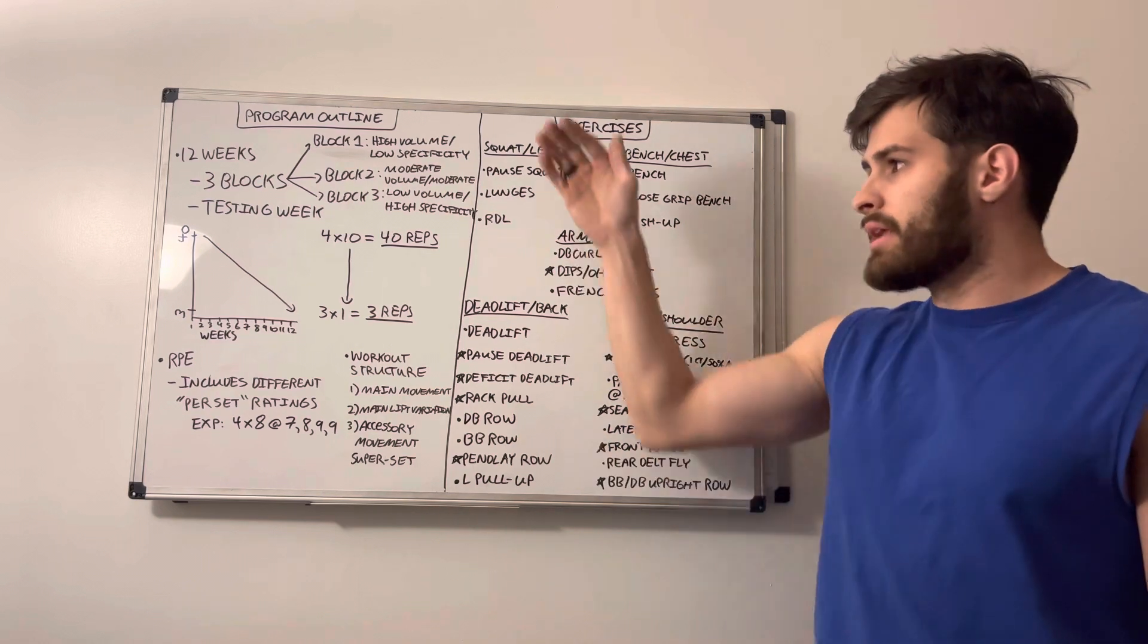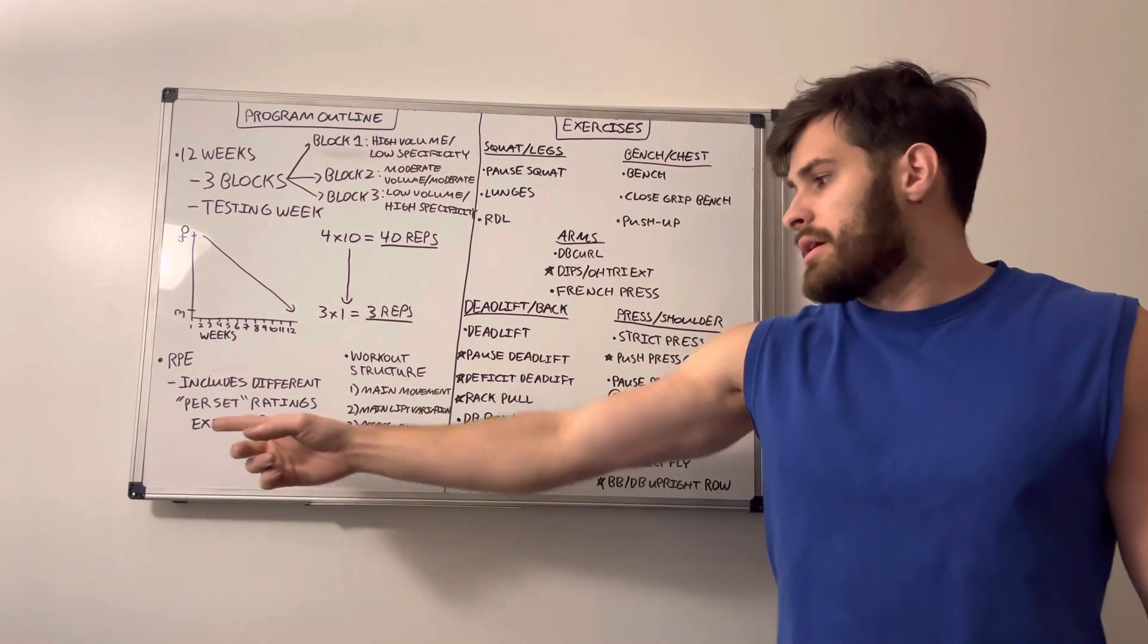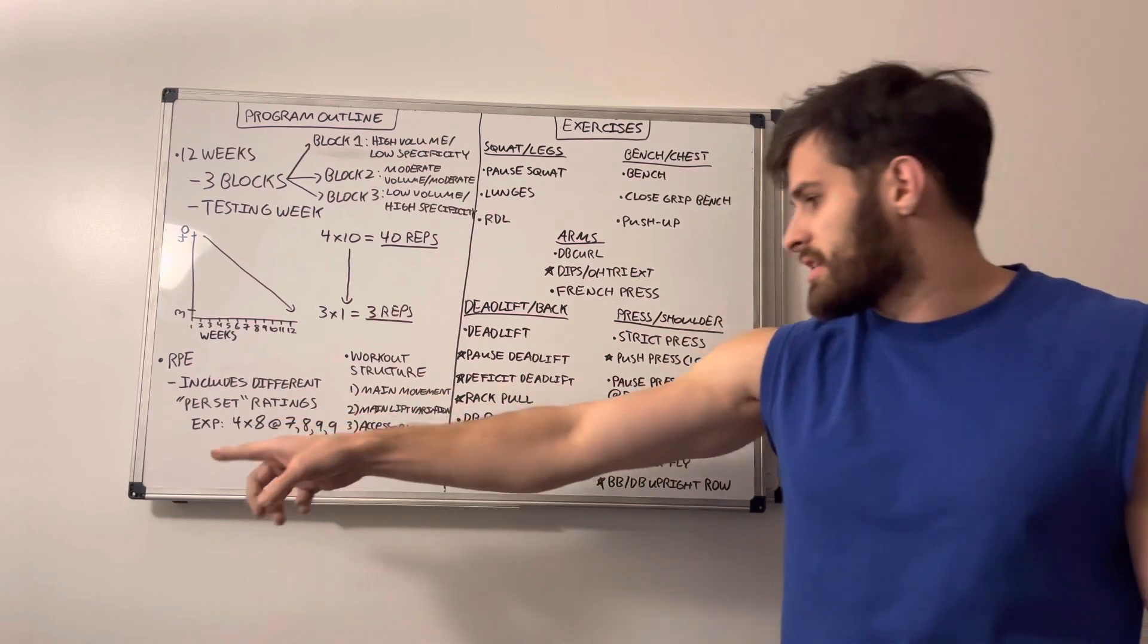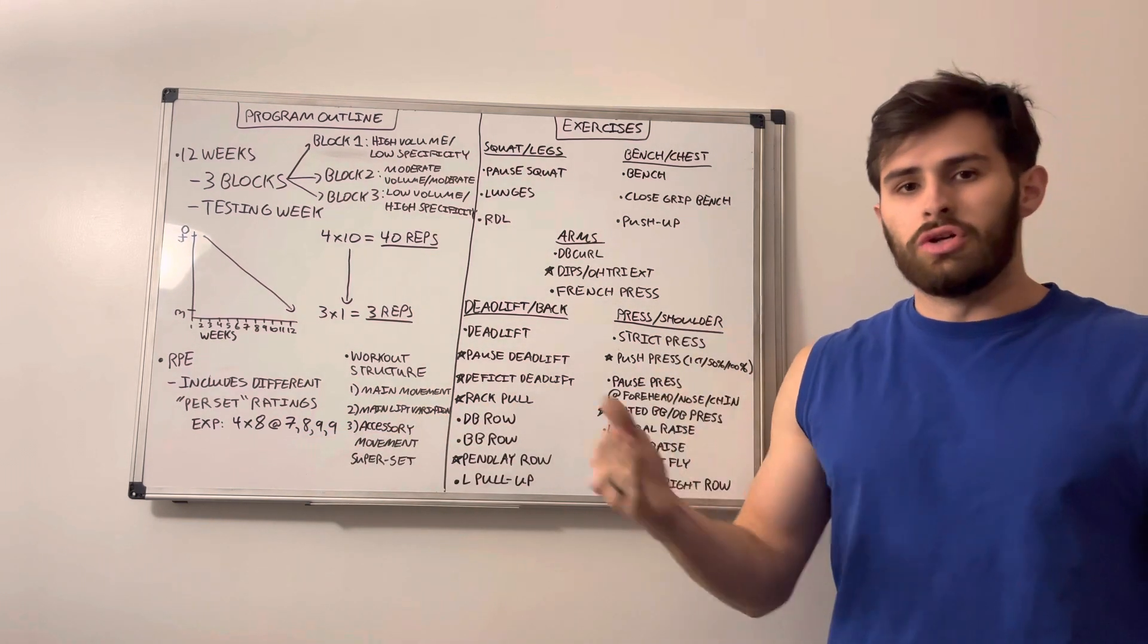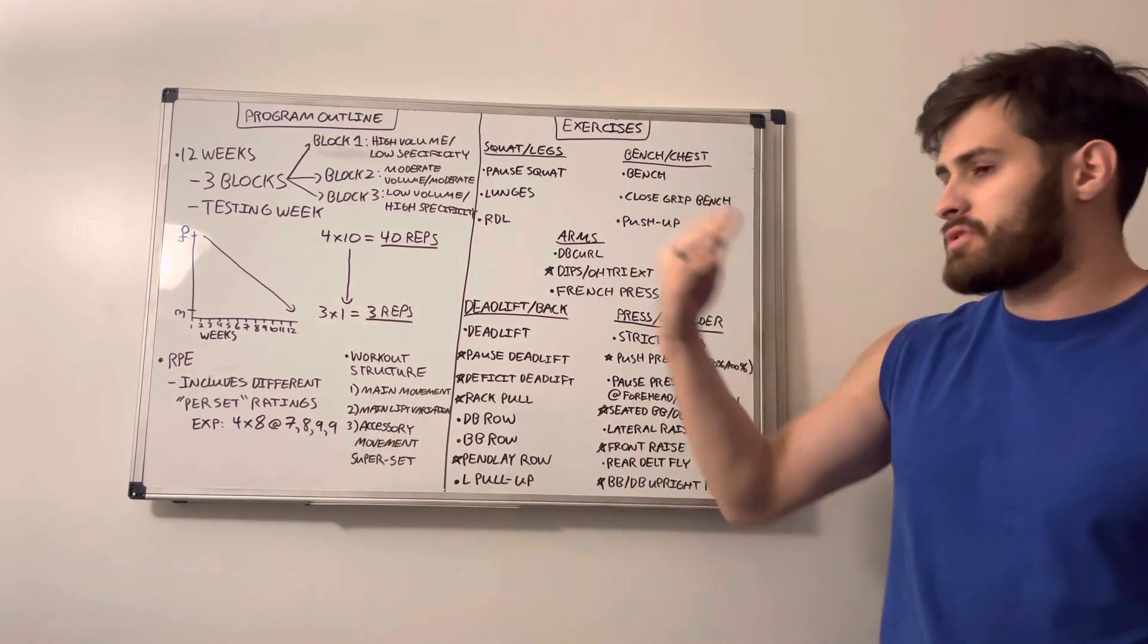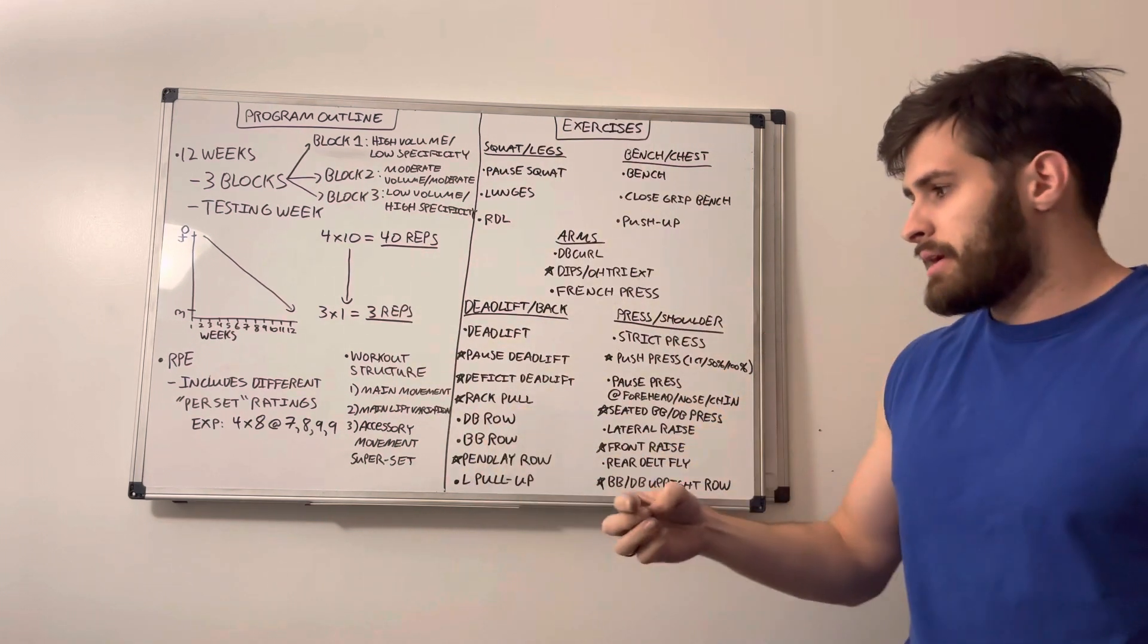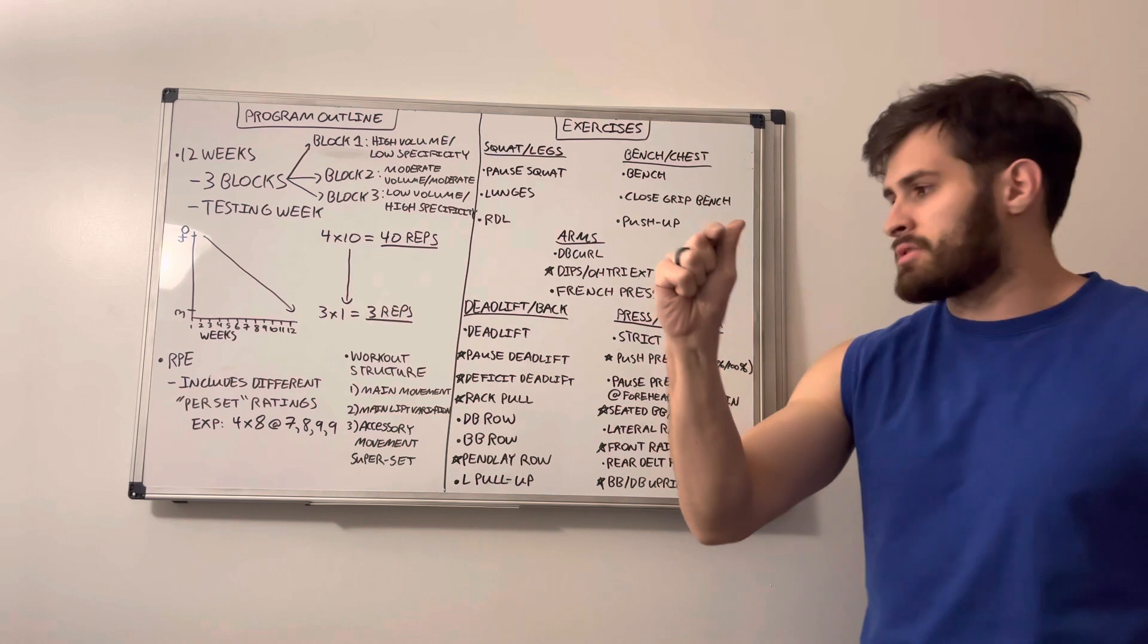However, there will get to a point later in the program to where not all the sets are going to be rated at the same RPE. So for example, we might have four sets of eight at seven, eight, nine, and nine. So what that means is that the first set of eight should be at an RPE 7. The second set should be at eight. And then the last two sets should be at RPE 9. So this won't actually change what you do in working up to your working sets. It's just they won't all be rated the same. So as you work up to those nines, you are to be mindful about your next weight increment.